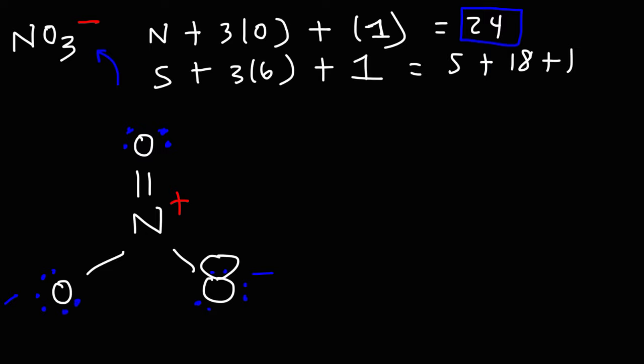Now there are some other things that you want to be aware of when considering the nitrate Lewis structure. For one thing, it has a trigonal planar molecular geometry. And these structures typically have a bond angle that is very close to 120 degrees. It can vary from one molecule to another, but for trigonal planar molecular shapes, the bond angle is around 120 degrees.